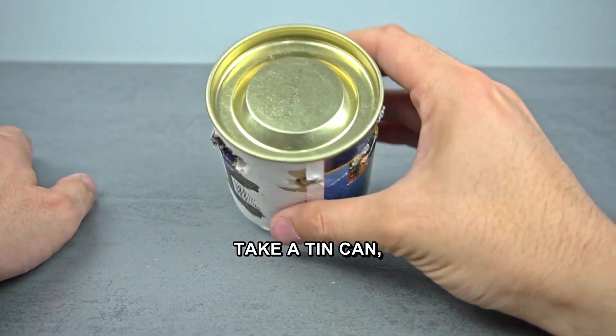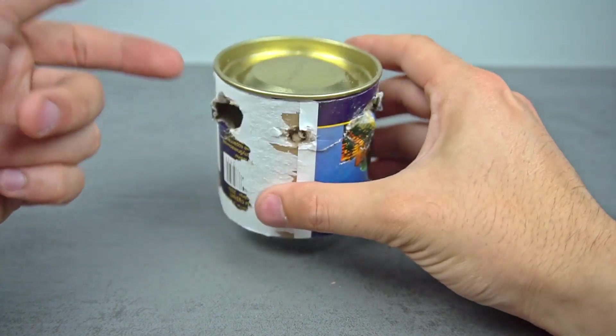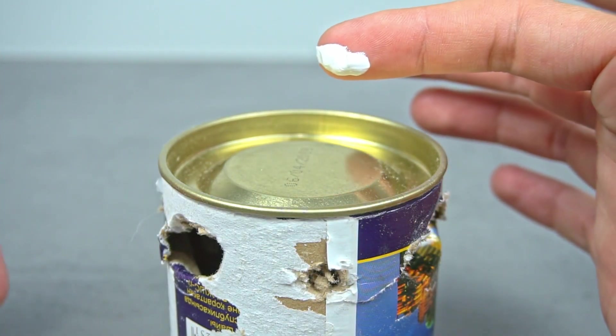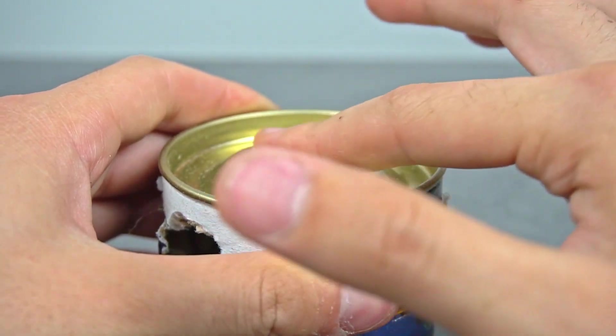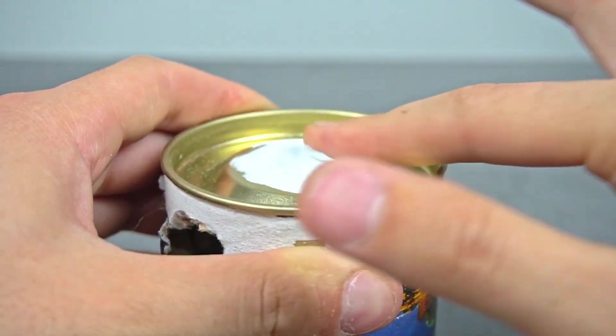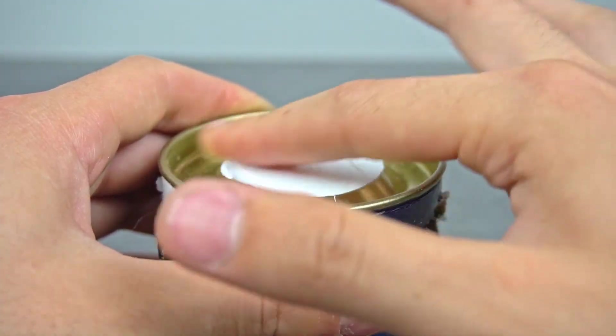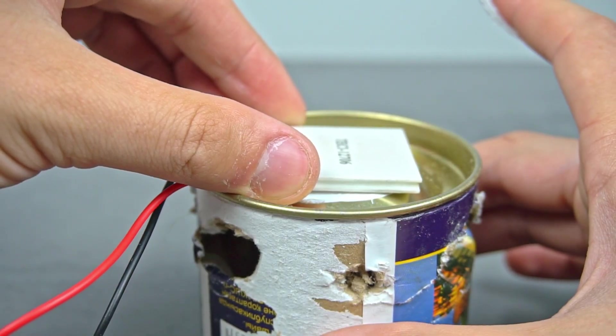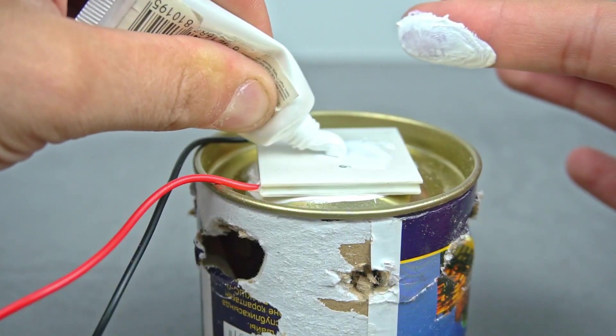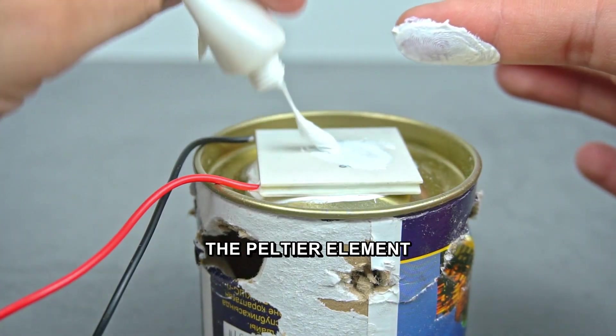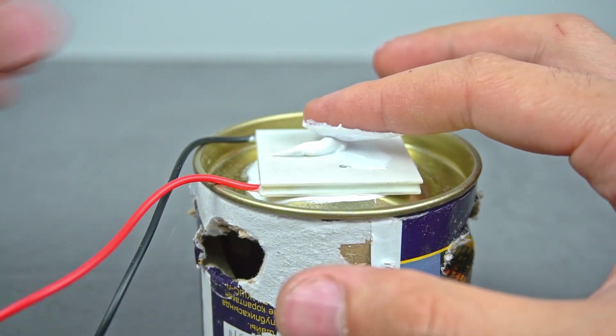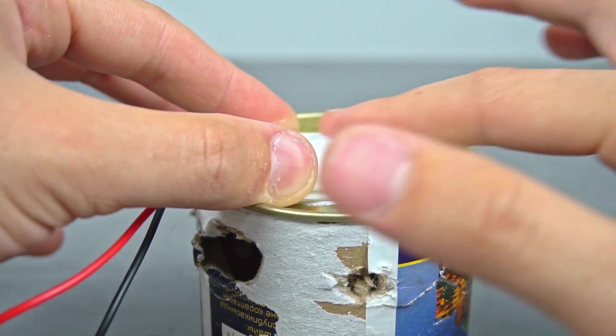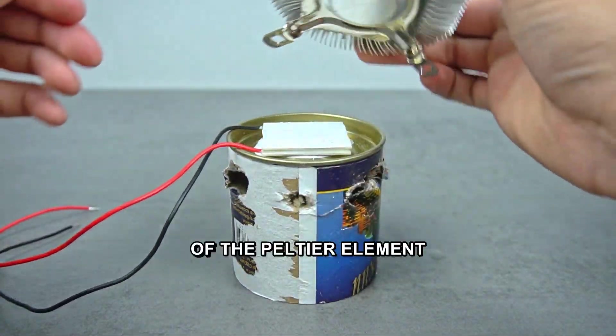Take a tin can, cut off the bottom and make side holes. Apply thermal paste to its surface. Install the Peltier element on the thermal paste. Also apply thermal paste to the Peltier element. Place a computer heatsink on top of the Peltier element.